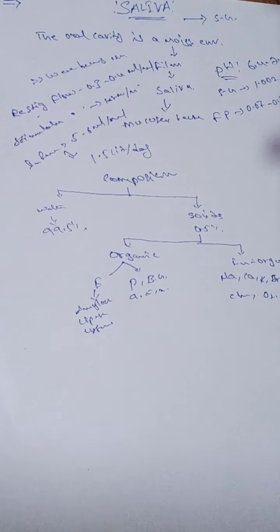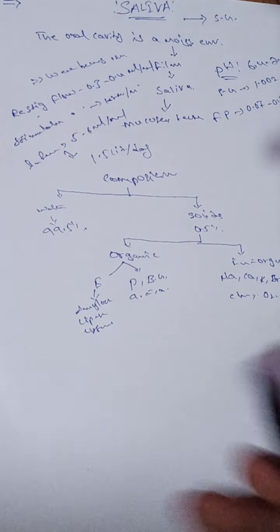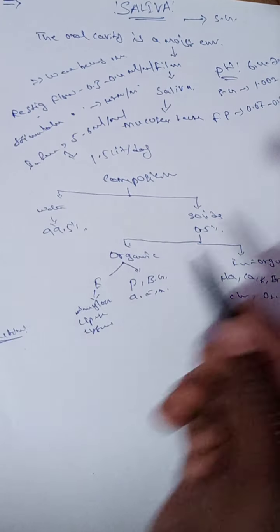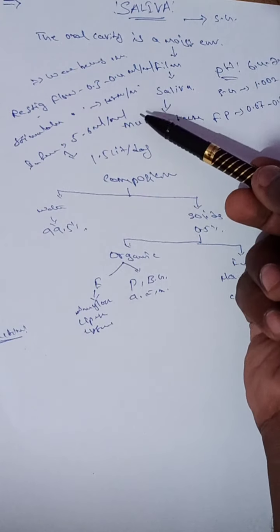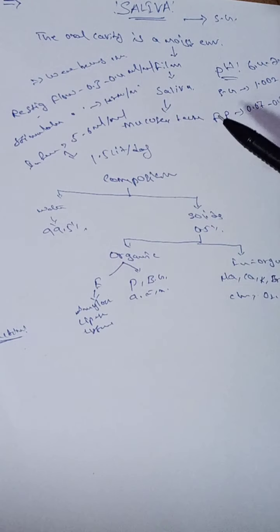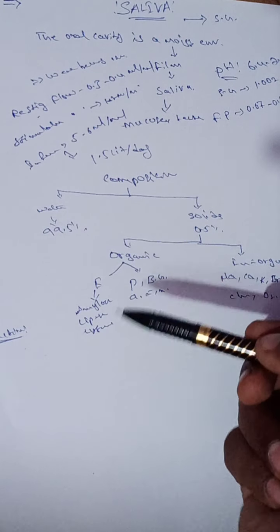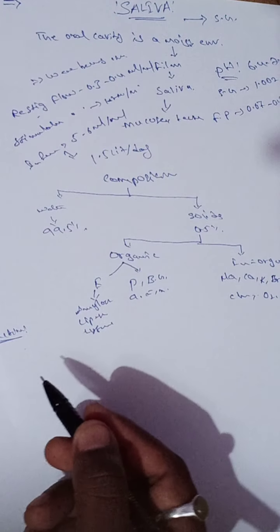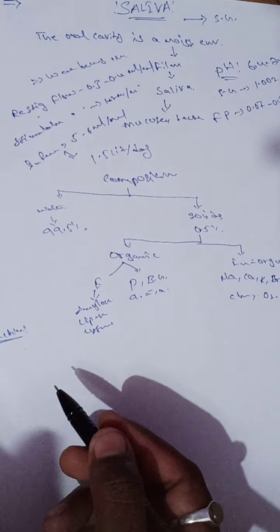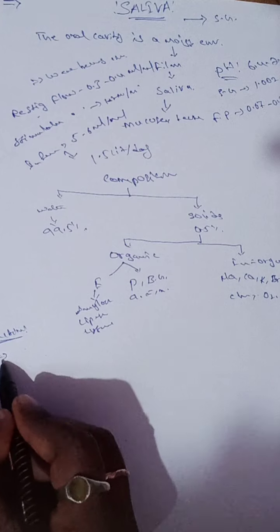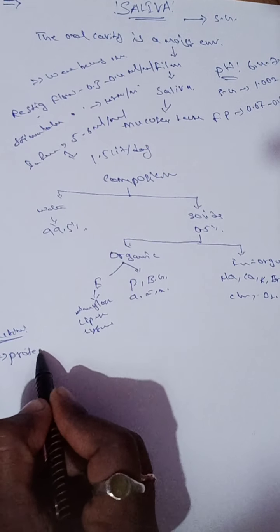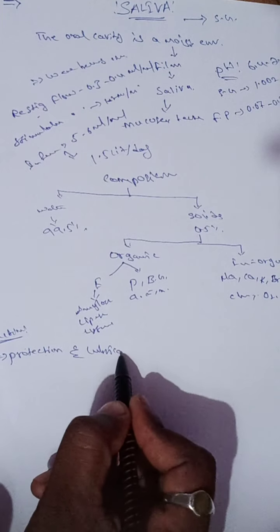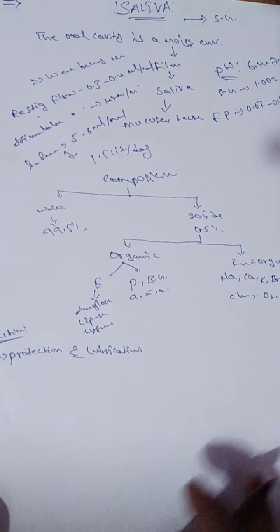So this is about saliva. Now we discuss the functions of saliva: its definition, physical properties, normal values, and composition. The first function is protection and lubrication.